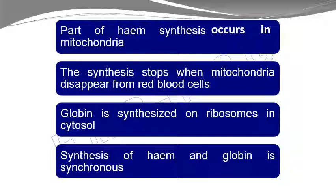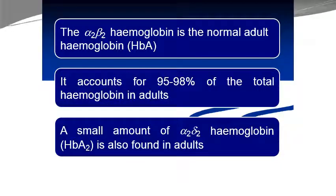The globin protein part of hemoglobin is synthesized on ribosomes located in the cytoplasm, and the whole process of synthesis of hemoglobin and globin are synchronized. The alpha-2 beta-2 form represents adult hemoglobin, denoted HbA. In a normal adult, the majority of hemoglobin is HbA. A minor portion is HbA2, which has two alpha chains and two delta chains.